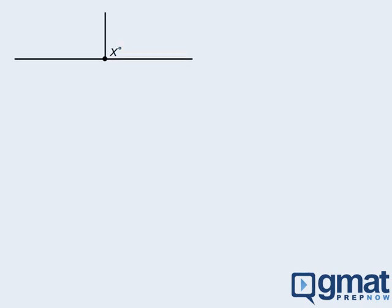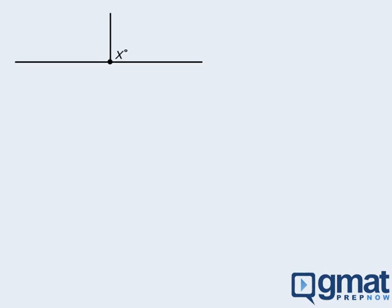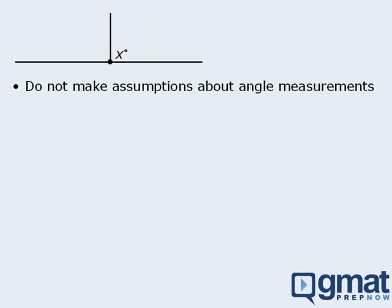Okay, now let's talk about specific angles. If we're given an angle like the one shown here, what assumptions can we make? Well, to begin, the angle certainly looks like a 90 degree angle. But can we assume that it's 90 degrees? The answer is no. When it comes to angle measurements, we cannot make any assumptions.